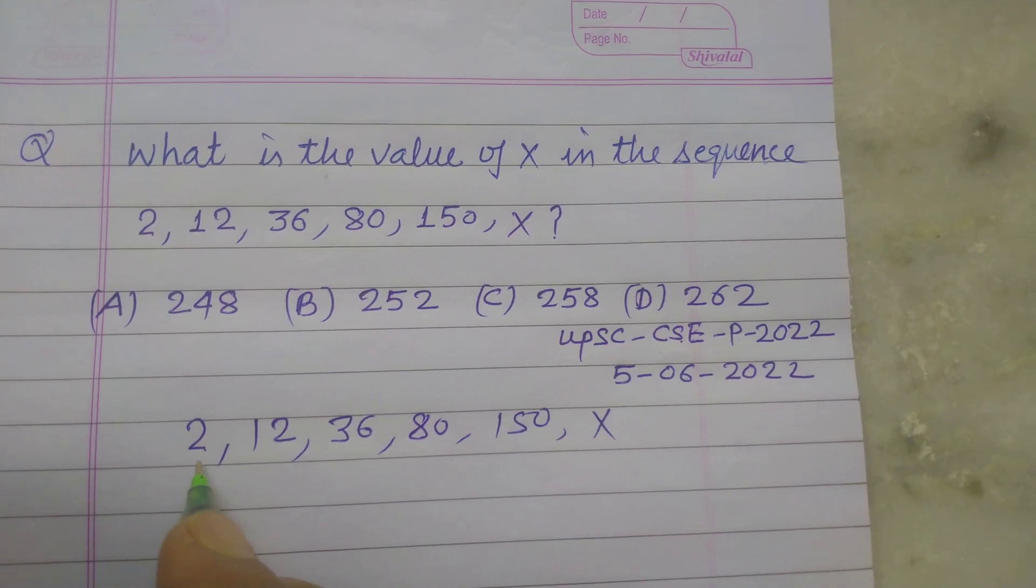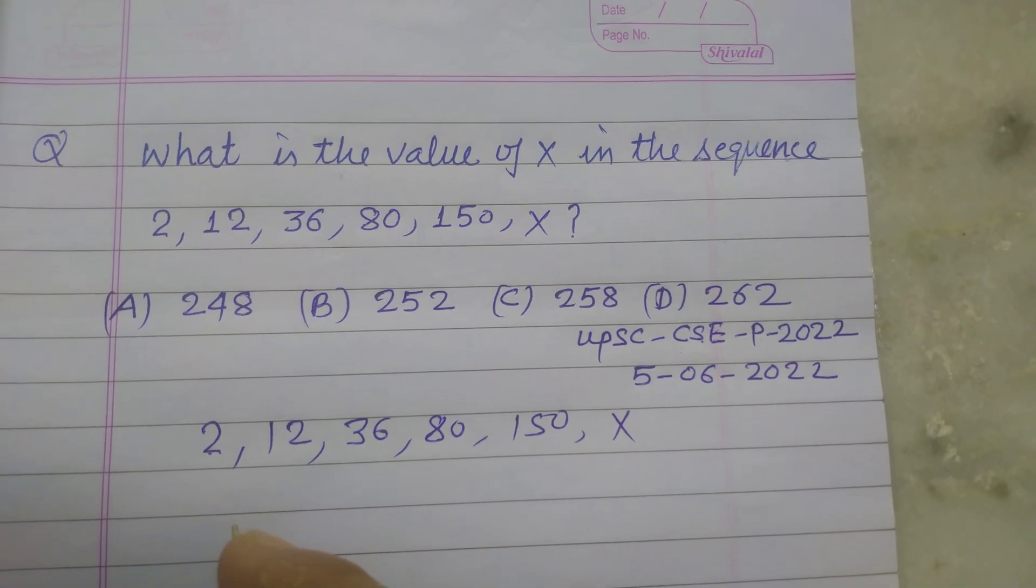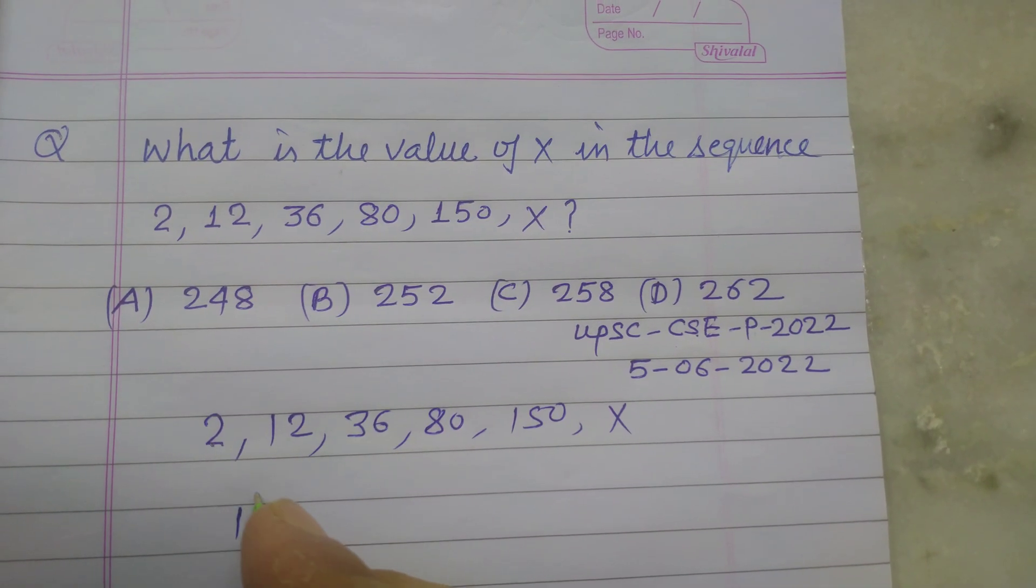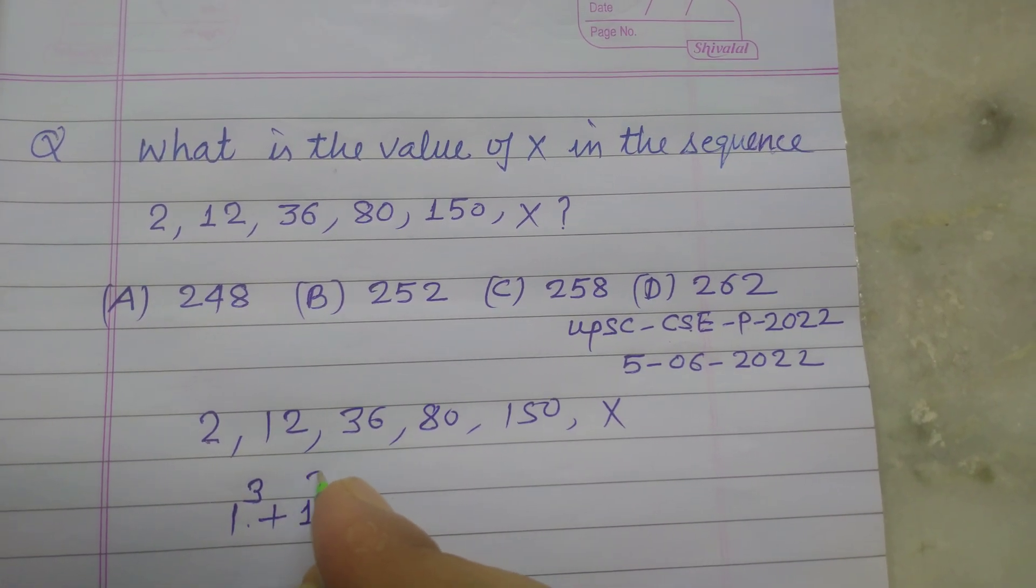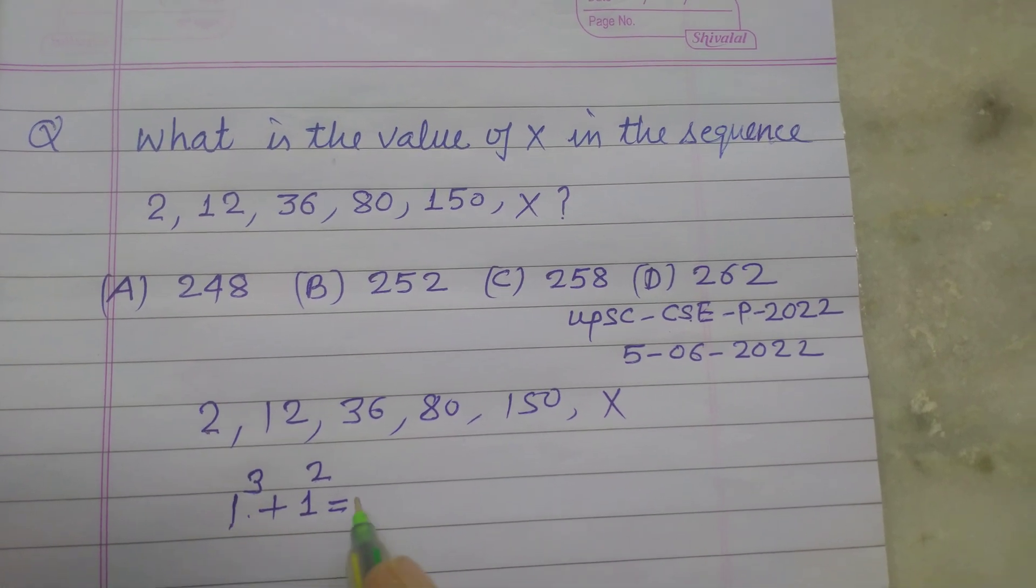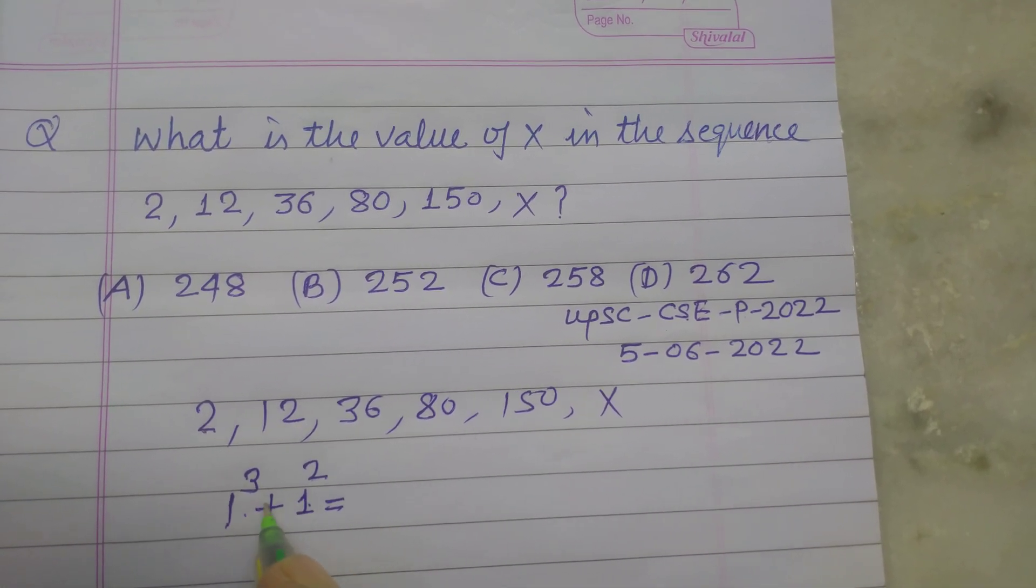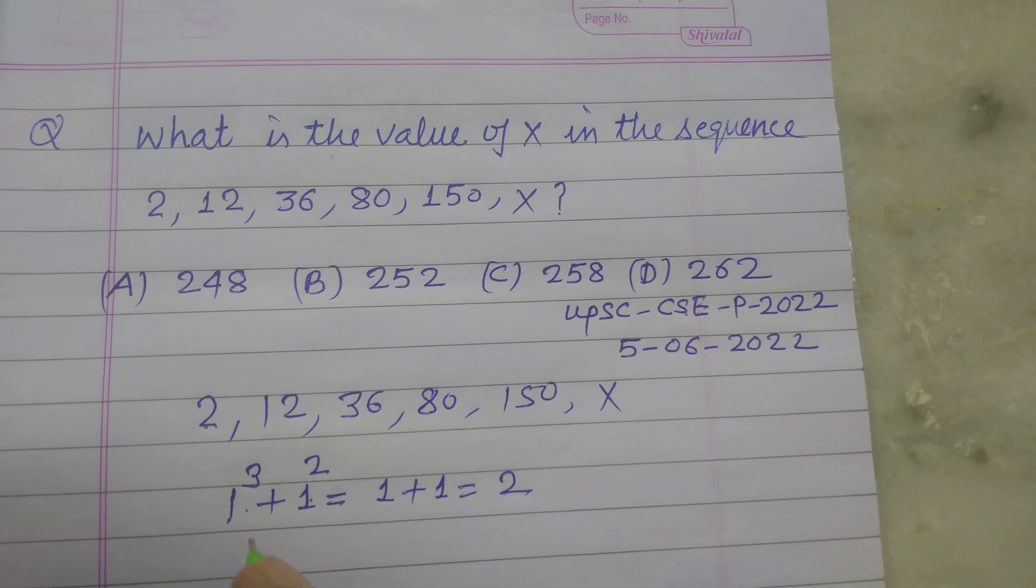Students, if you look at these terms, these are coming by the cube of 1 plus square of 1. If we make cube of 1 and square of 1 and add them, we get 1 plus 1 equal to 2. So this is the first term.